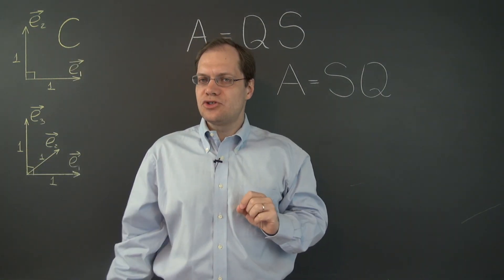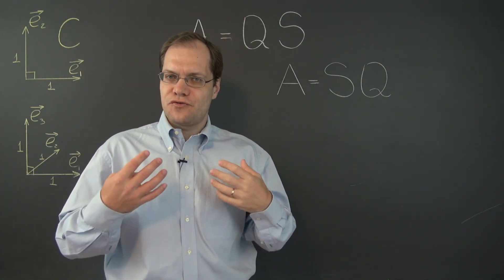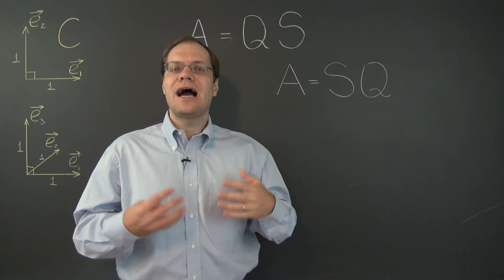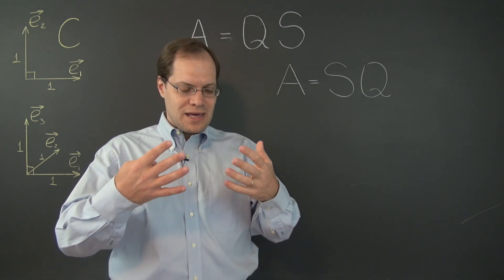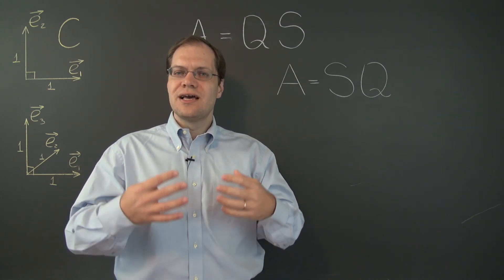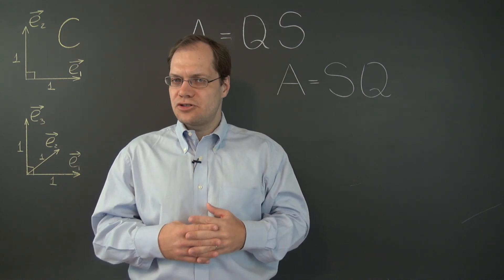Except now what do we have to do in order to take advantage of Q being orthogonal? How can we somehow make the matrix Q transpose end up right next to the matrix Q?